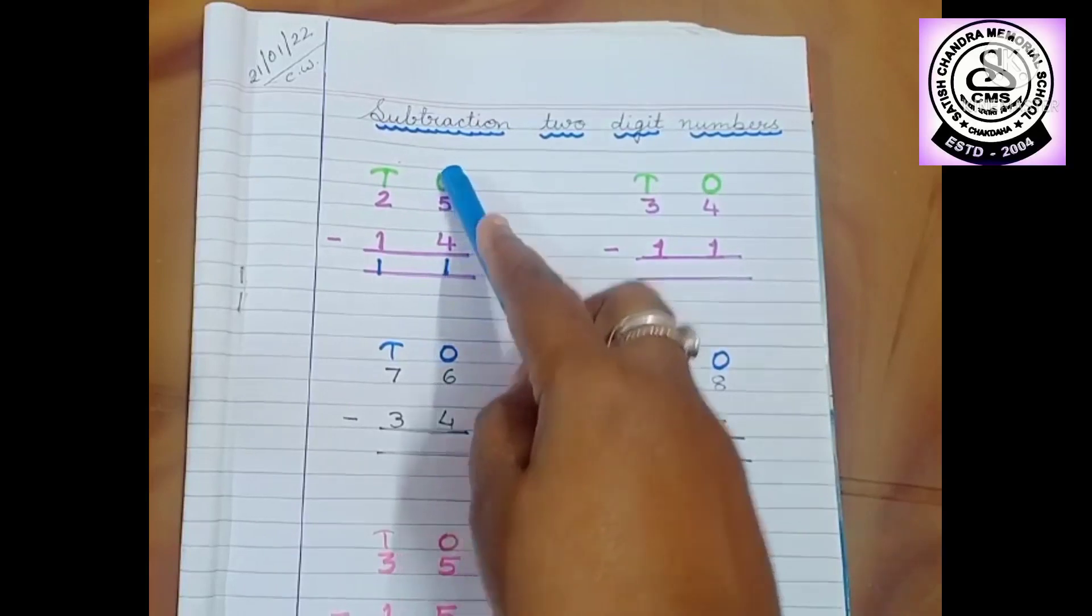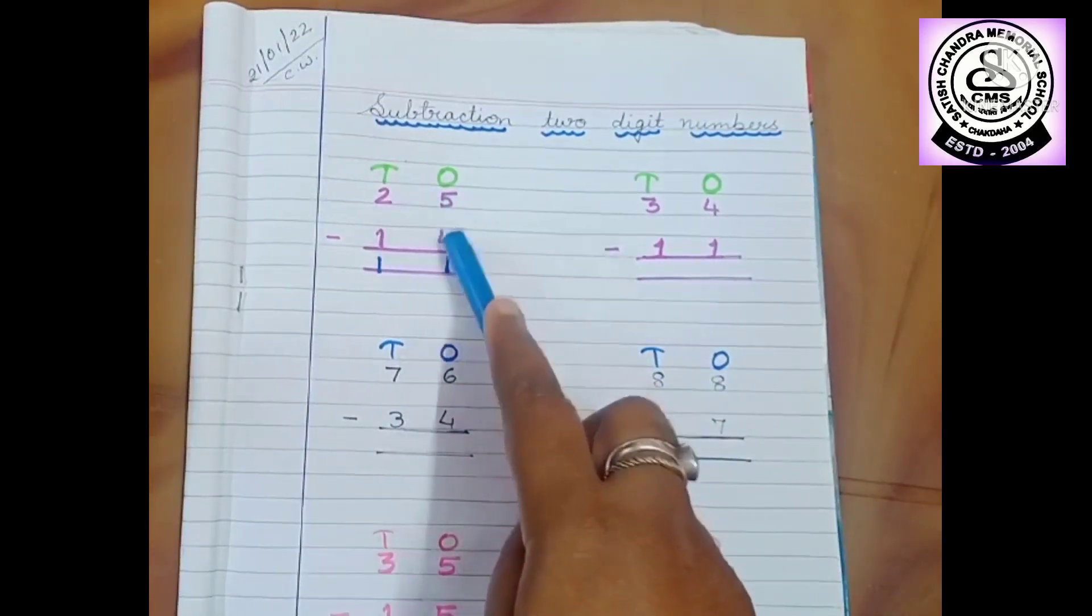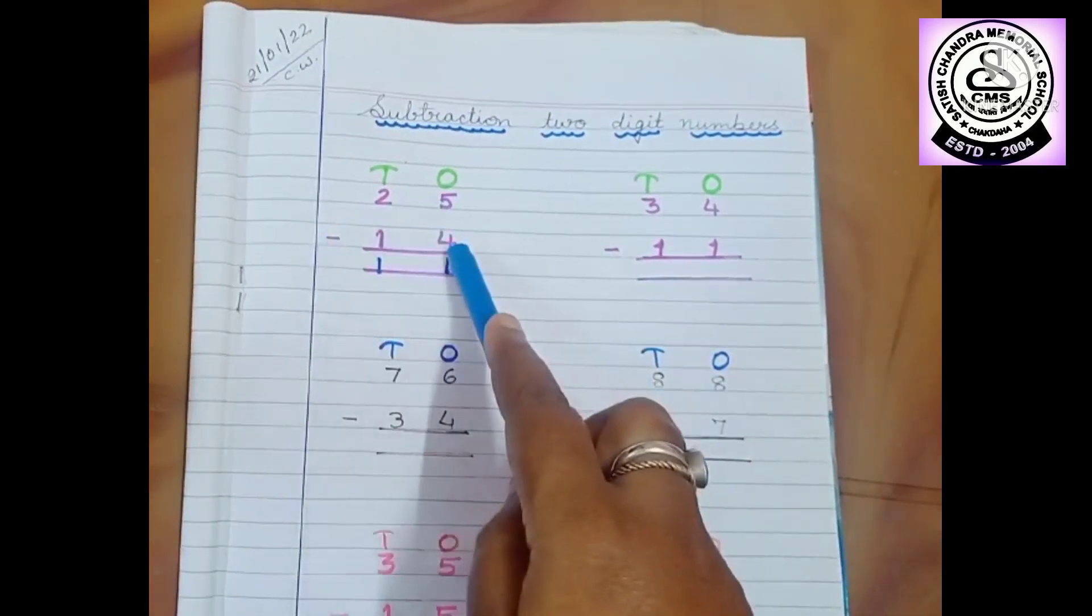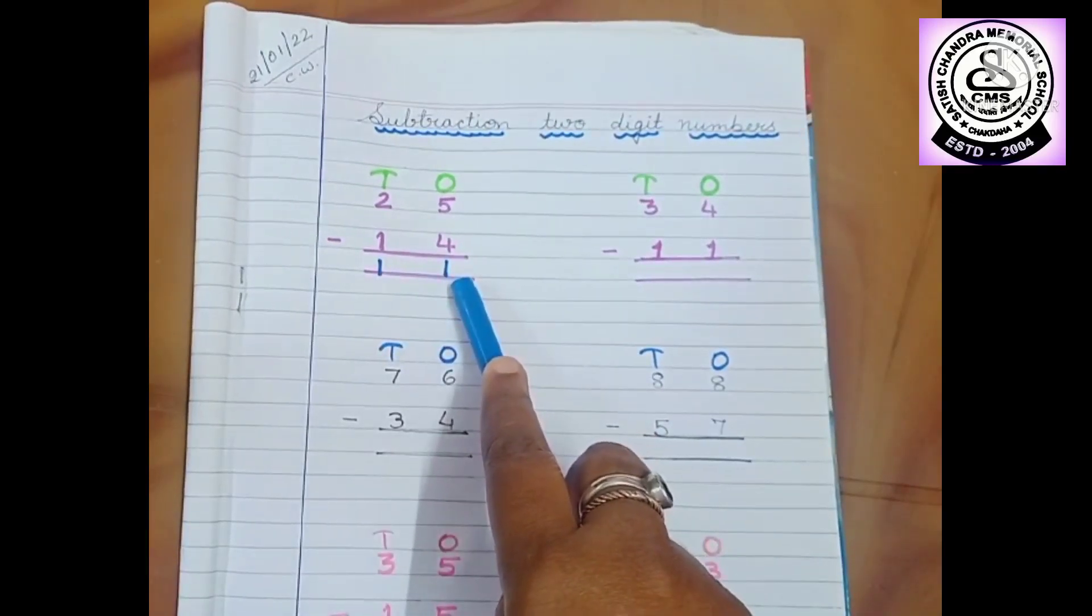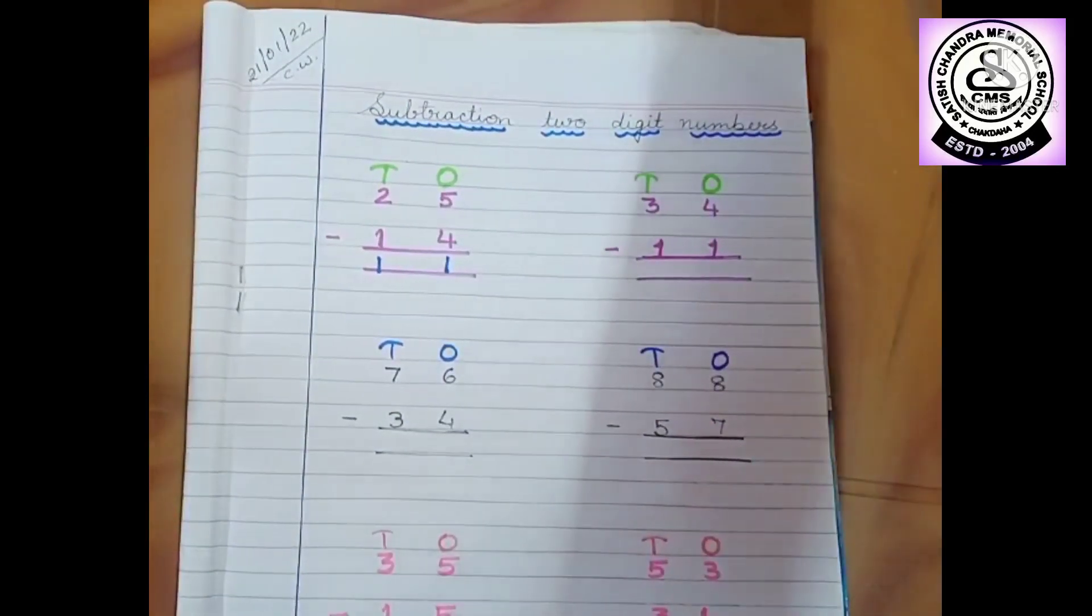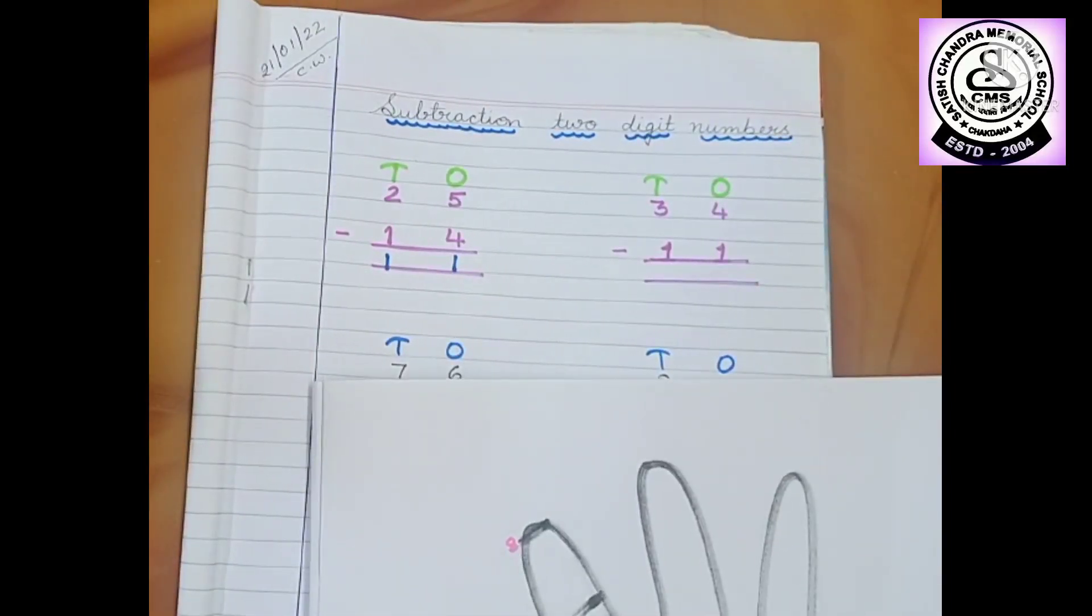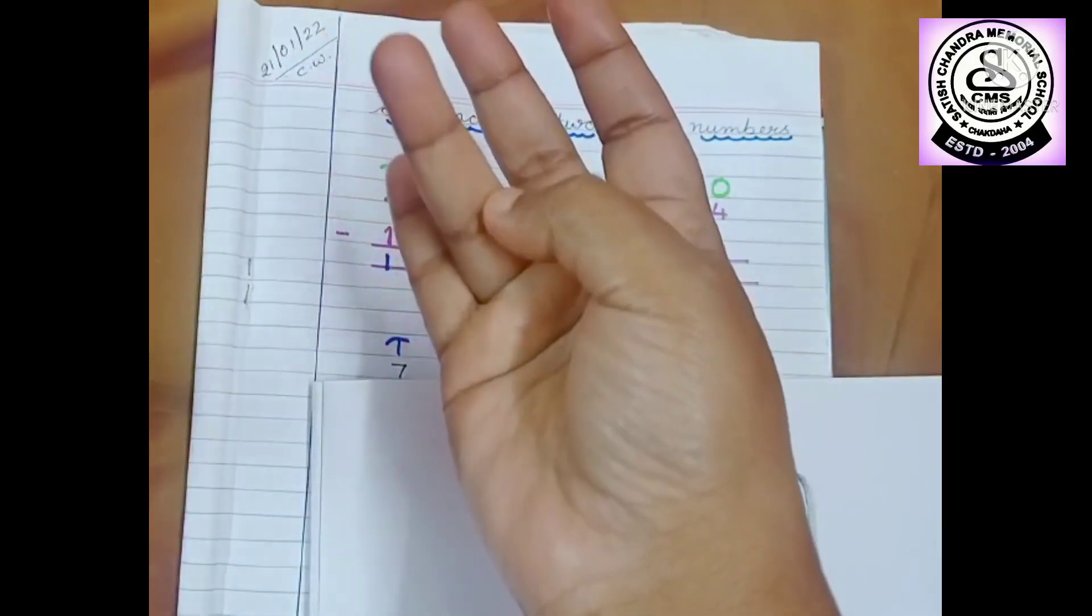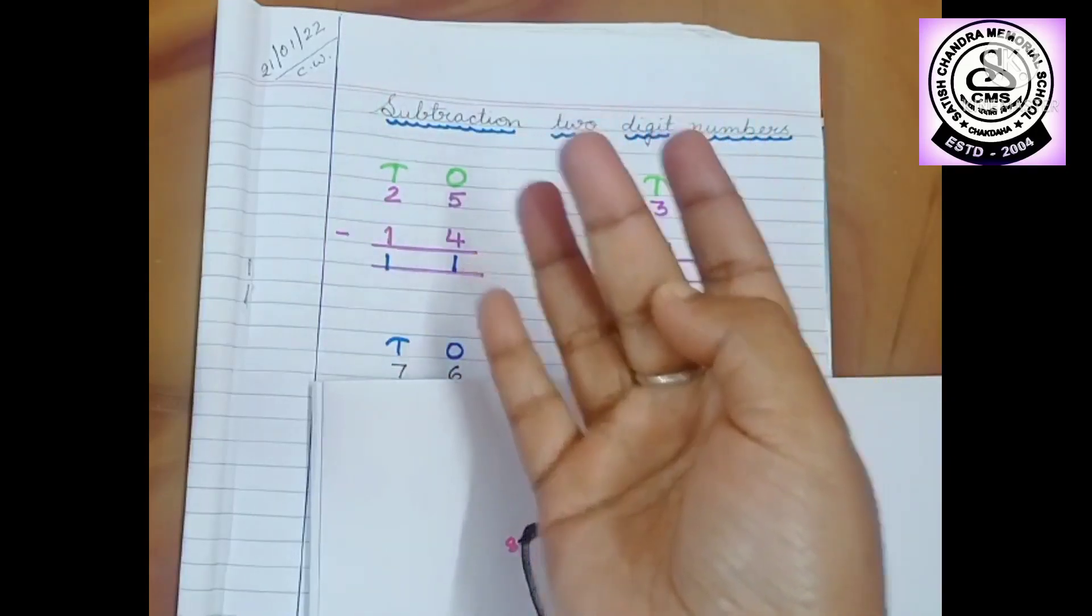So here it is written. First you have to subtract the 1's place. Place, you have to write first 1's and 10's. Then 5 minus 4, then 2 minus 1. So 1. I have already done 5 minus 4. So how you count? I know you all know the counting with our house number, that is with our fingers. That is 1, 2, 3, 4, 5, 6, 7, 8, 9, 10. You all know house number.